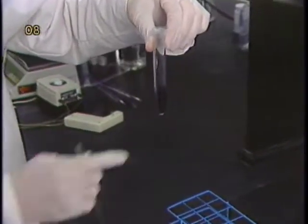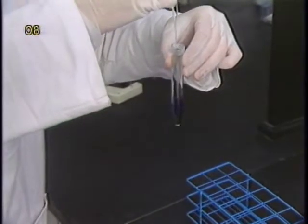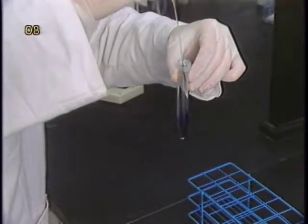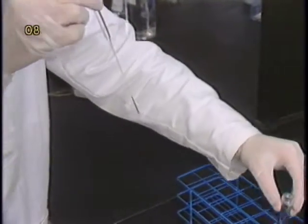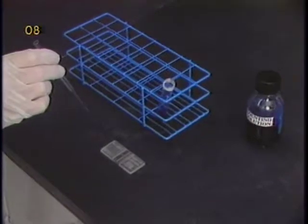After releasing all the nuclei into the counting solution, you are ready to count in the hemocytometer. In general, nuclei stay in suspension relatively well. However, if the nuclei suspension has been sitting for some time, mix it gently before placing it in the hemocytometer.